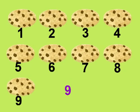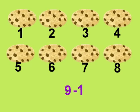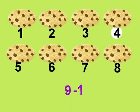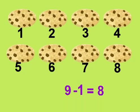If we have nine cookies left and we subtract one more, how many cookies do we have? One, two, three, four, five, six, seven, eight. We have eight cookies left. Excellent.